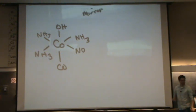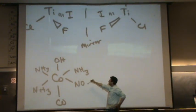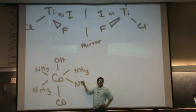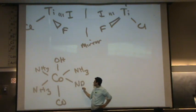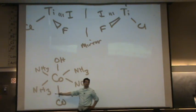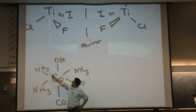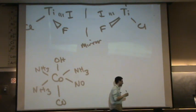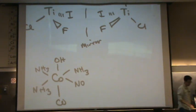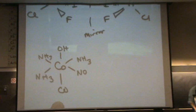By the way, when you see this kind of drawing, when it's angled downward, that means it's coming towards you. So, this NO and this NH3 are coming towards you out of the board. When it's angled back upwards, this NH3 and this NH3 are going into the board. Everything else is in the plane. So, the OH and the CO are in the plane.